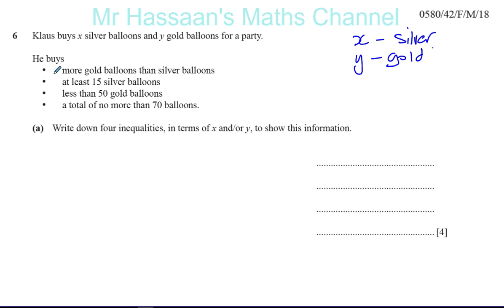Starting with the first one: more gold balloons than silver balloons. That means Y, the gold balloons, must be greater than X, the silver balloons. The number of gold balloons is more than the number of silver balloons. That's the first inequality done.